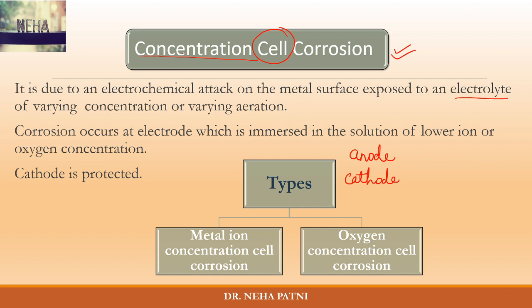In the last video on galvanic cell corrosion, two dissimilar metals were present and based on the galvanic series the active metal becomes the anode. Now think: if the metals are not different — in fact they are the same — does it still corrode? Can the same metal get corroded? I'll say yes, because this is the most common type of corrosion.